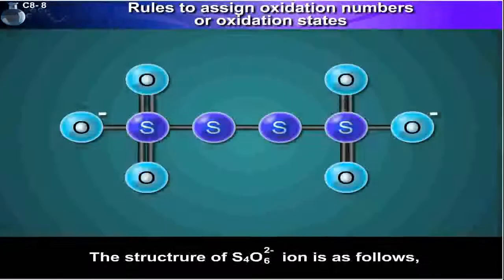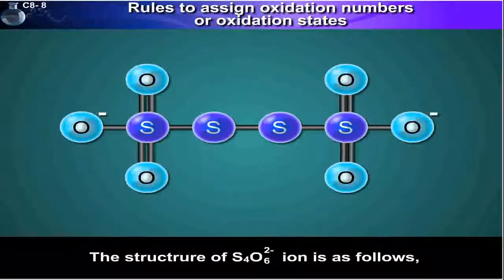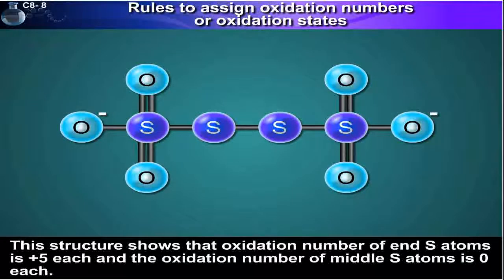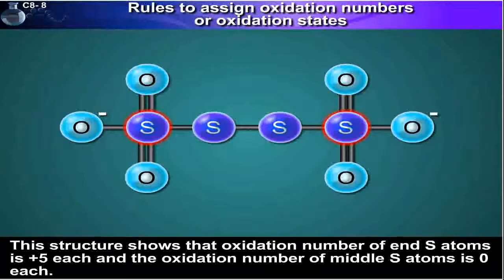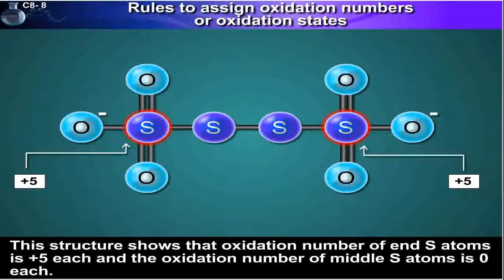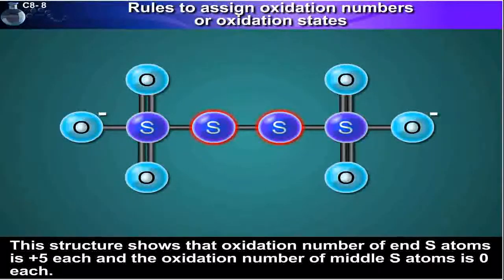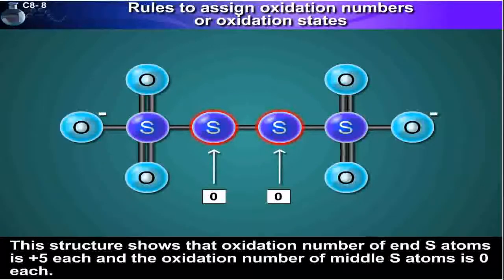The structure of the S₄O₆²⁻ ion is as follows. This structure shows that the oxidation number of the outer sulphur atoms is +5 each, and the oxidation number of the middle sulphur atoms is 0 each.